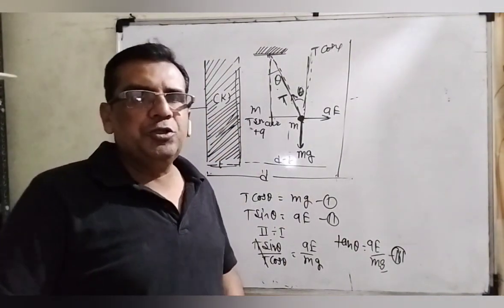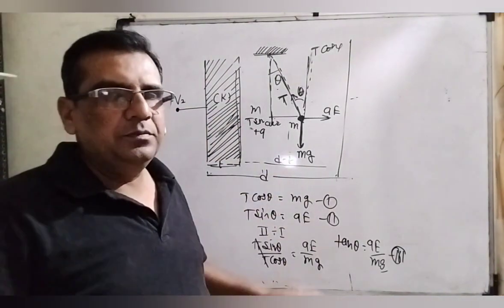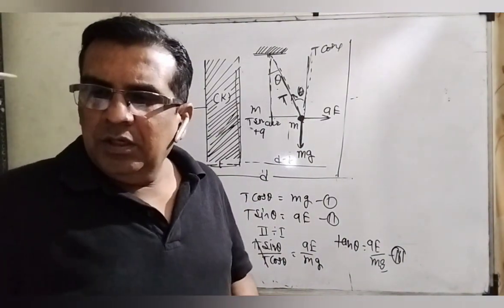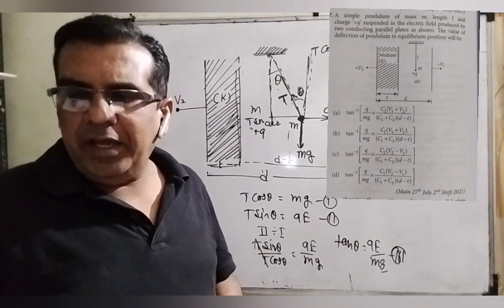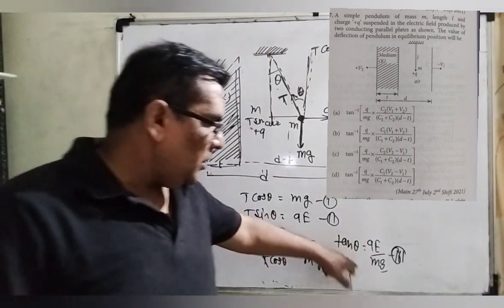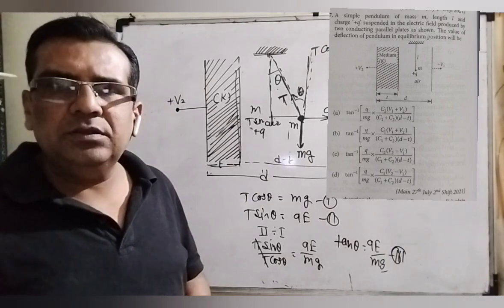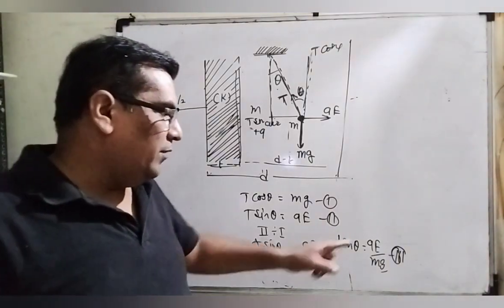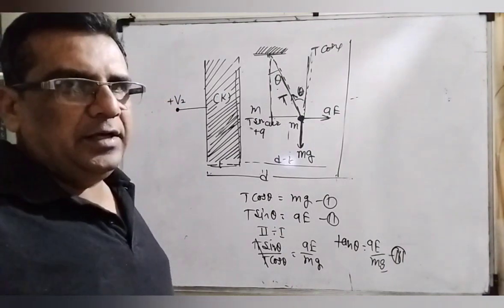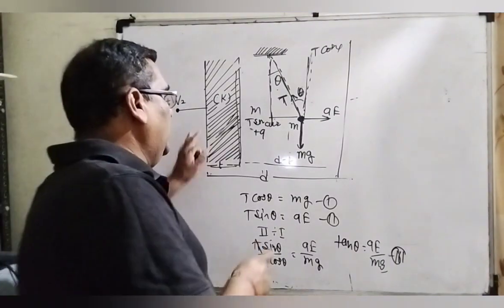Whenever we solve the question, we should keep looking at the option in between the intervals. Here in the options, tan inverse Q by mg. In all options we can see that Q by mg. Only E is replaced. So therefore, first we have to find out the E. Let us see how we can get the E.